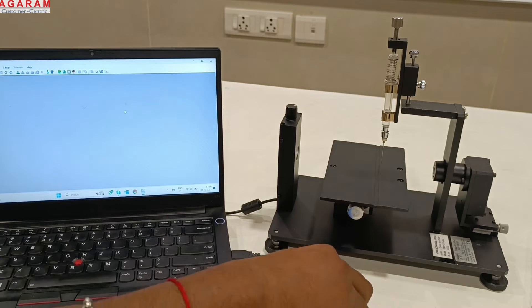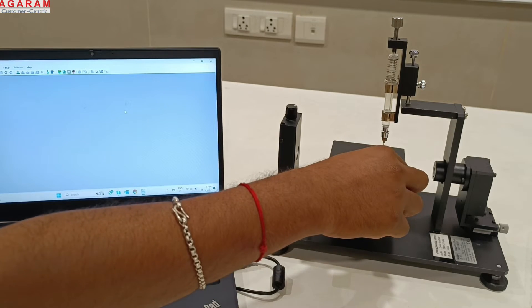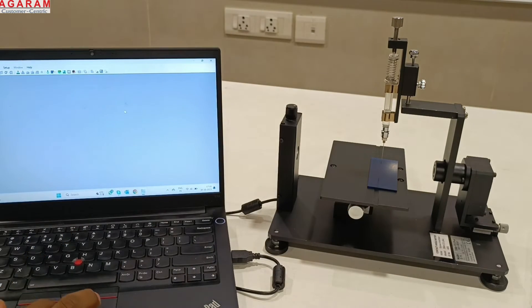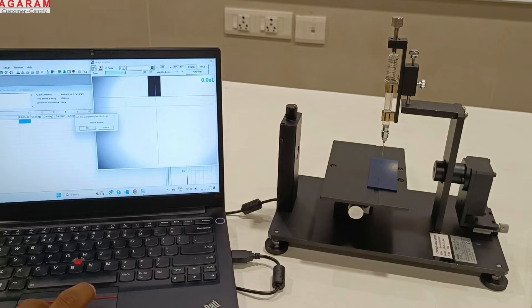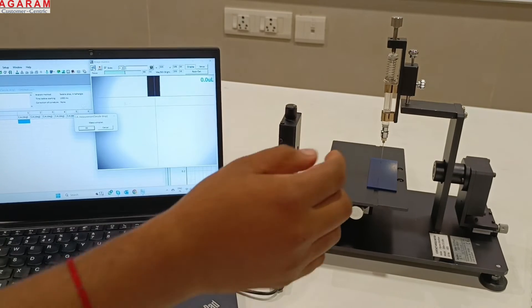Performing measurements on contact angle meter is simple. Place your sample on the stage and fill the syringe with the desired liquid that has to be deposited.